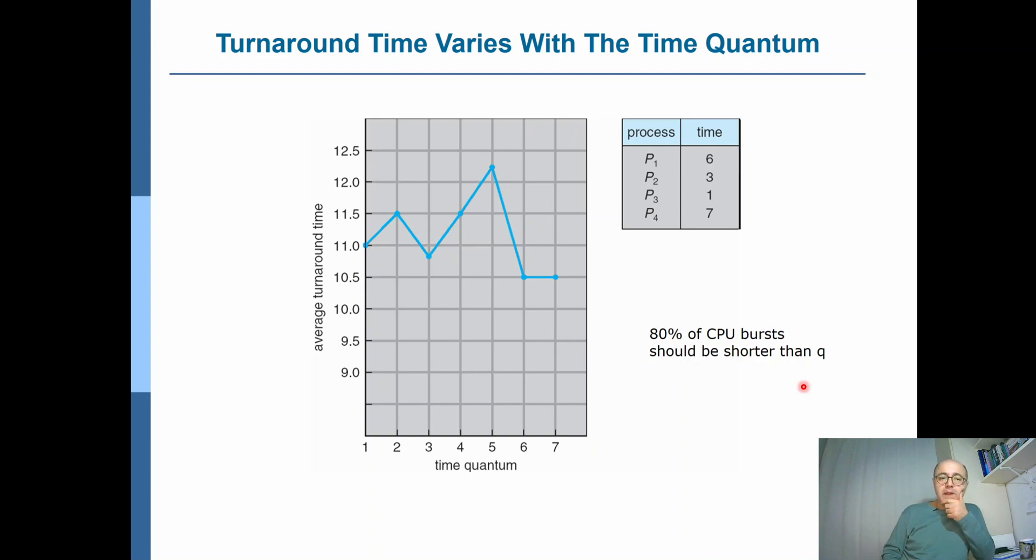One important thing to note is, as the time quantum increases, it should be large enough. But depending on the scenario, here you're given a scenario, for example, P1, 2, 3, 4 with execution times of 6, 3, 1, and 7. For different time quantums, if you solve this system, you see that the average turnaround time, as time quantum increases, gets worse. As the time quantum increases, the average turnaround time first gets worse, then better, then terrible, then better, doesn't change. So in fact, what we can say is, the turnaround time varies with the time quantum, but in a random fashion. Actually, if you just change the numbers here, the results will also change.